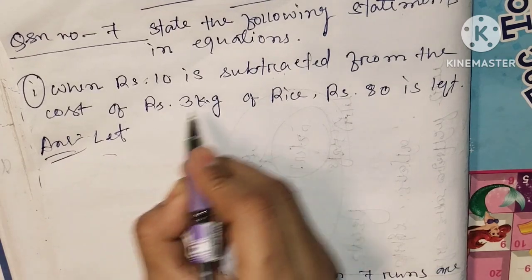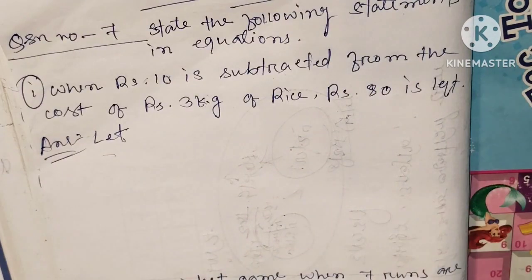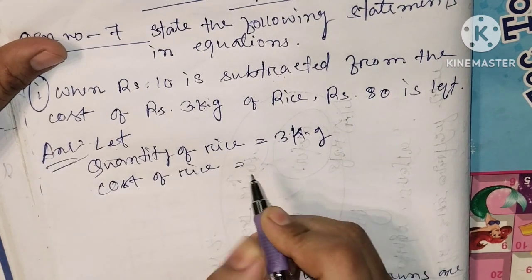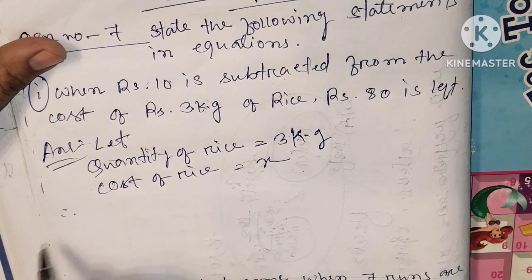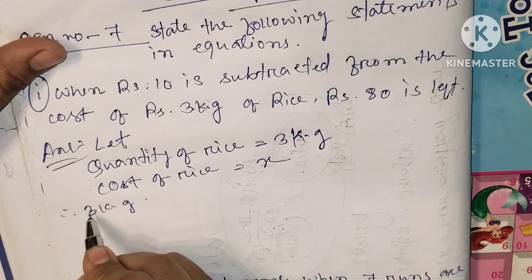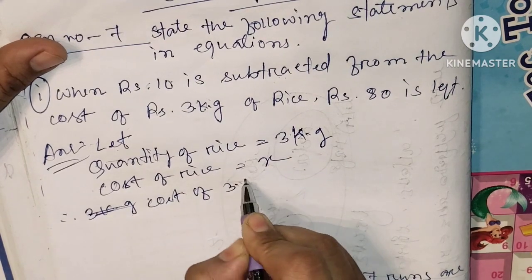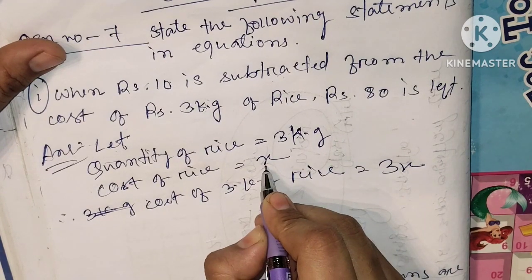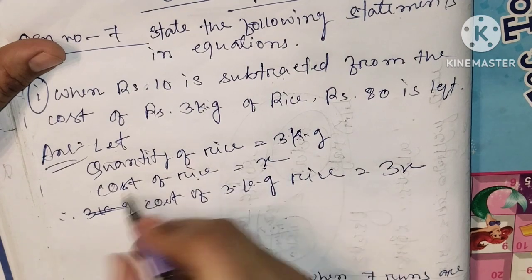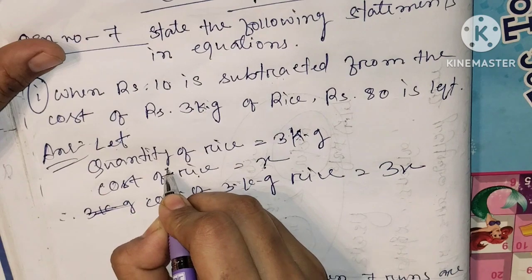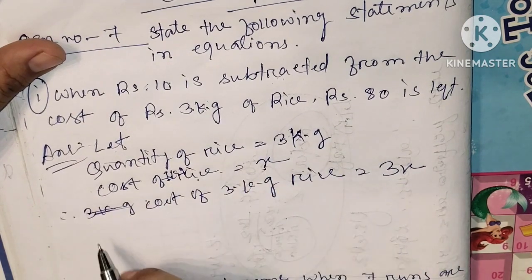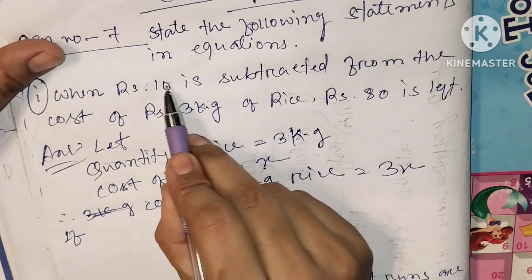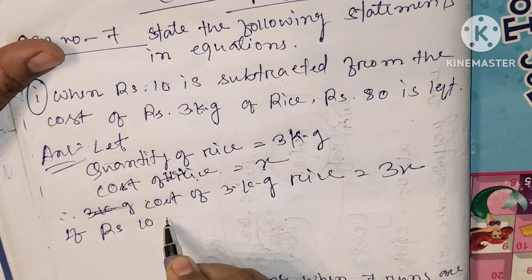Quantity of rice, quantity of rice. Cost of rice, cost of rice. Cost of rice, cost of rice. If I tell him: if 10 is subtracted...